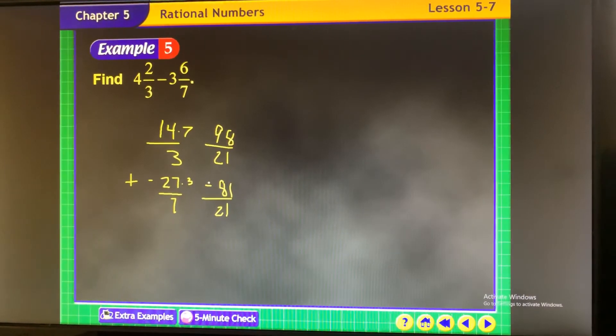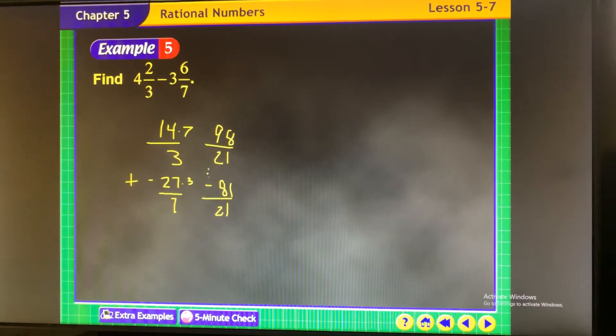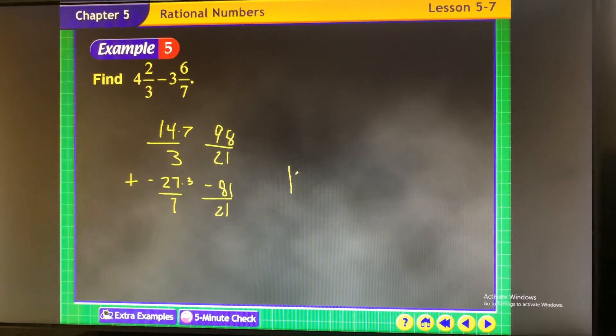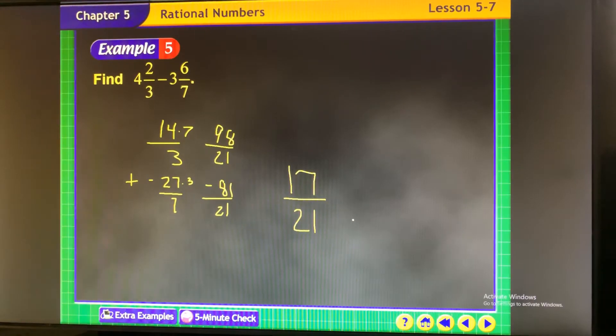Negative. And then pay attention that you have a positive and negative. So you're going to subtract those two numbers to get 17 over 21. Is it negative? No. Because there's more positives. So it's 17 over 21 and you're done.